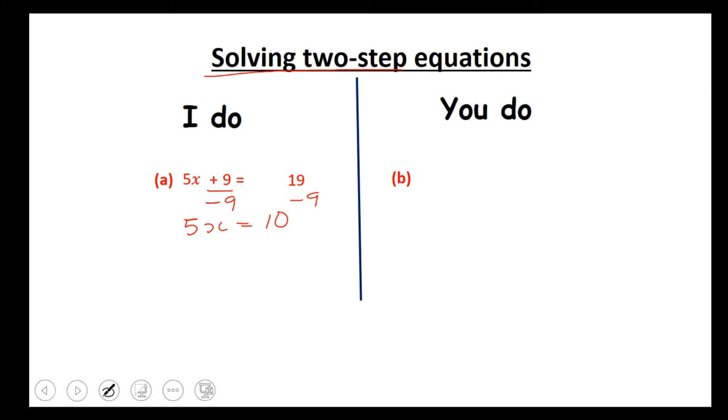Next step now. 5x means 5 times by x. The inverse of times is divide. So we divide both sides by 5. And the answer that we should get is x equals 2.